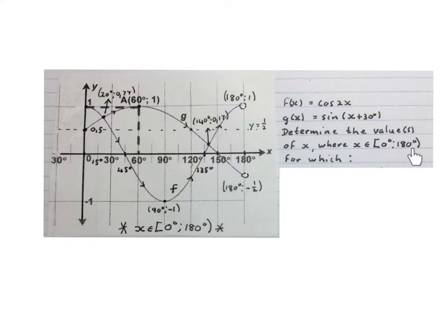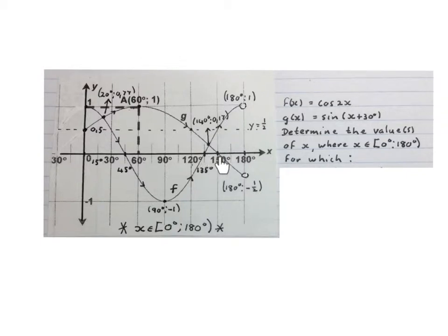Here is the y-axis, here is the x-axis. The graph starts at 0 degrees included and goes all the way to 180 degrees excluded. Here is the g graph, here is the f graph. We have all the x-intercepts: 45 degrees, 135 degrees, 150 degrees. The maximum value on both graphs is 1, the minimum on f is minus 1 and on g is minus a half (for this portion). The two graphs intersect at 20 degrees at y ≈ 0.77 and also at 140 degrees at y ≈ 0.17.